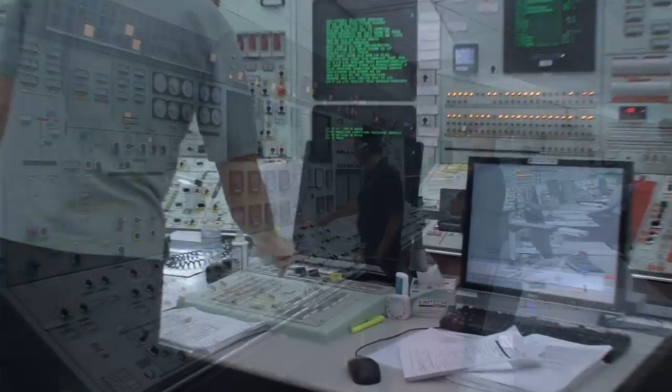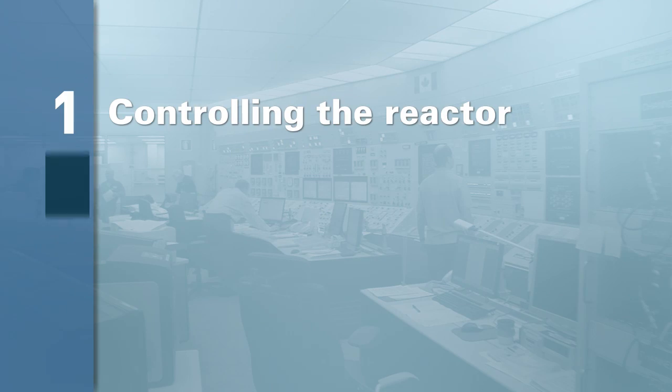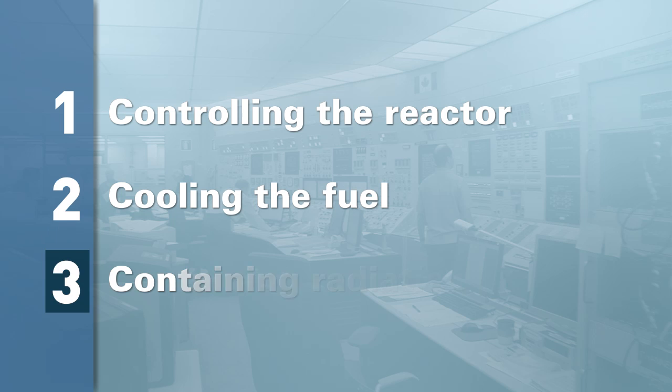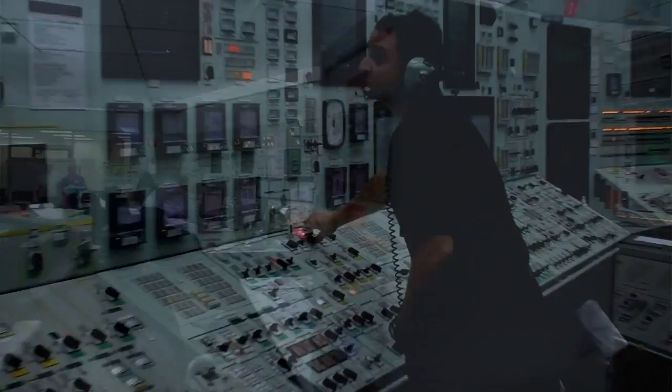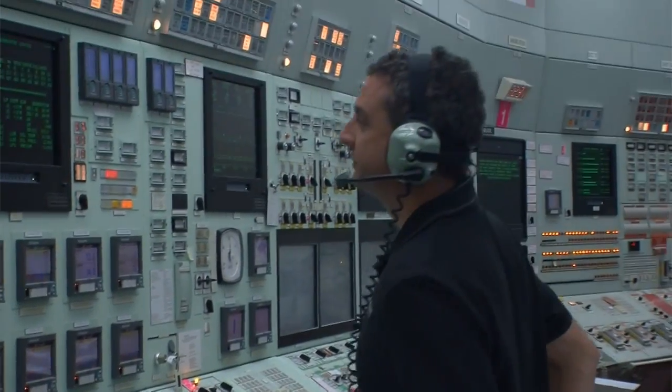Nuclear power plants have multiple safety systems to ensure three basic functions: controlling the reactor, cooling the fuel, and containing radiation. These systems are maintained and inspected regularly, and upgraded when necessary, to ensure plants meet or exceed safety standards.